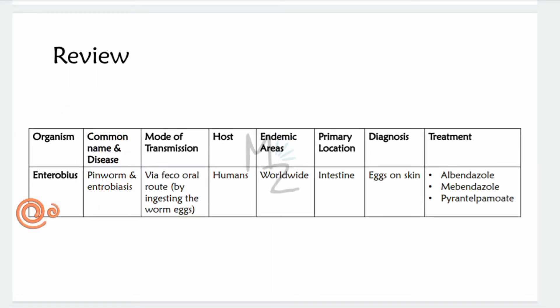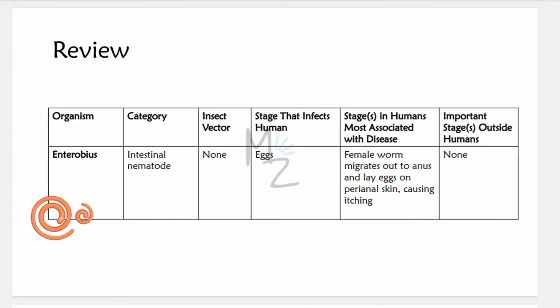Quick review: the organism is Enterobius vermicularis, common name pinworm. It causes enterobiasis, also called pinworm infection or oxyuriasis; common names include threadworm and seedworm. Transmission is via the feco-oral route, but human-to-human transmission can also occur by ingesting worm eggs. Humans are the only host — no animal reservoirs. It is endemic worldwide. Primary location is the intestine. Diagnosis is based on finding eggs on skin. Drugs of choice are albendazole, mebendazole, and pyrantel pamoate. There is no insect vector. The stage most associated with disease is the gravid female that migrates to the anus and lays eggs on perianal skin, causing itching.